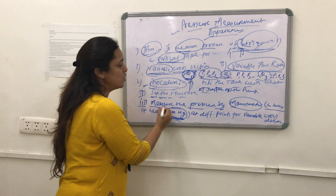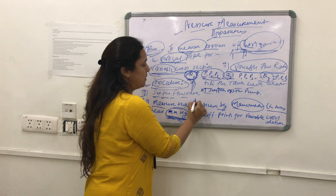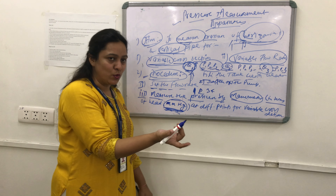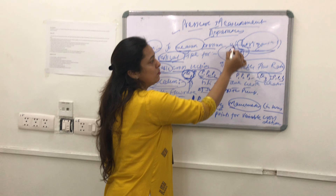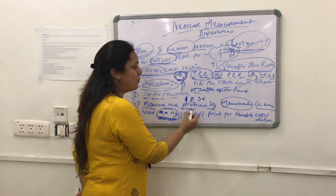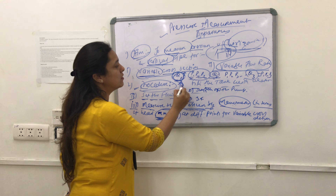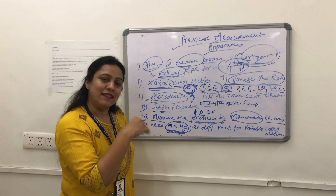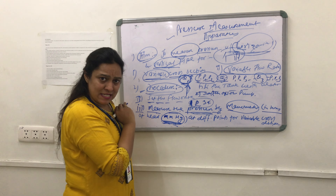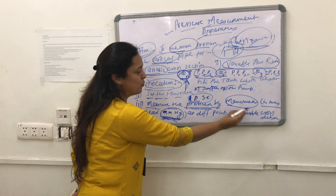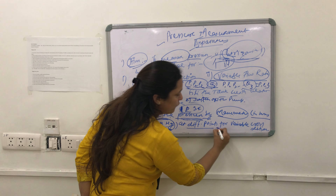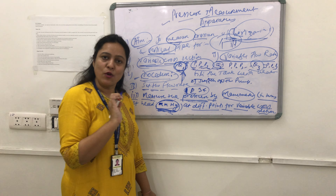Measure the pressure at all the points — P1, P2, P3 — corresponding to this flow rate Q1. Then change to Q2, Q3 and so on, and measure all sets. So step three is: measure the pressure by manometer in terms of mmHg at different points for the variable cross section, as already discussed.